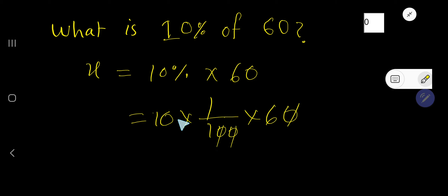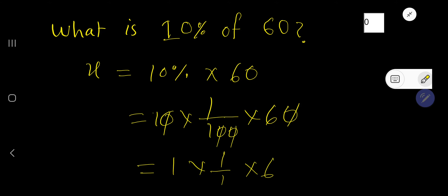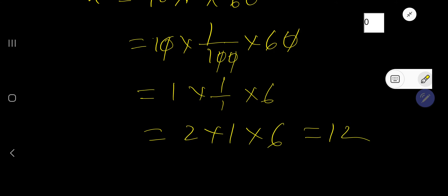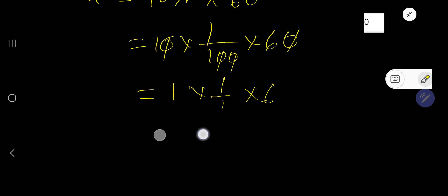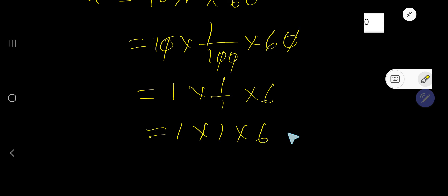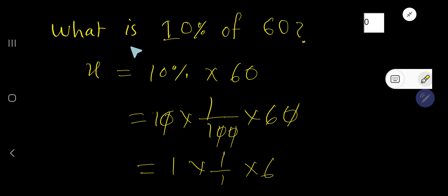After canceling the zeros, we get 1 times 1 over 1 times 6. So 1 times 6 equals 6. Therefore, 6 is 10% of 60.